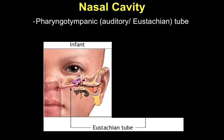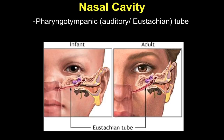The pharyngotympanic tube in an infant is more horizontal than in an adult, where it is more oblique. This difference means that in an adult, gravity typically works against the spread of infections from the nasopharynx into the middle ear. In an infant, however, because they sleep on their back and nurse frequently, and because the tube is more horizontal, gravity cannot prevent infections from spreading as effectively from the nasal cavity into the middle ear.